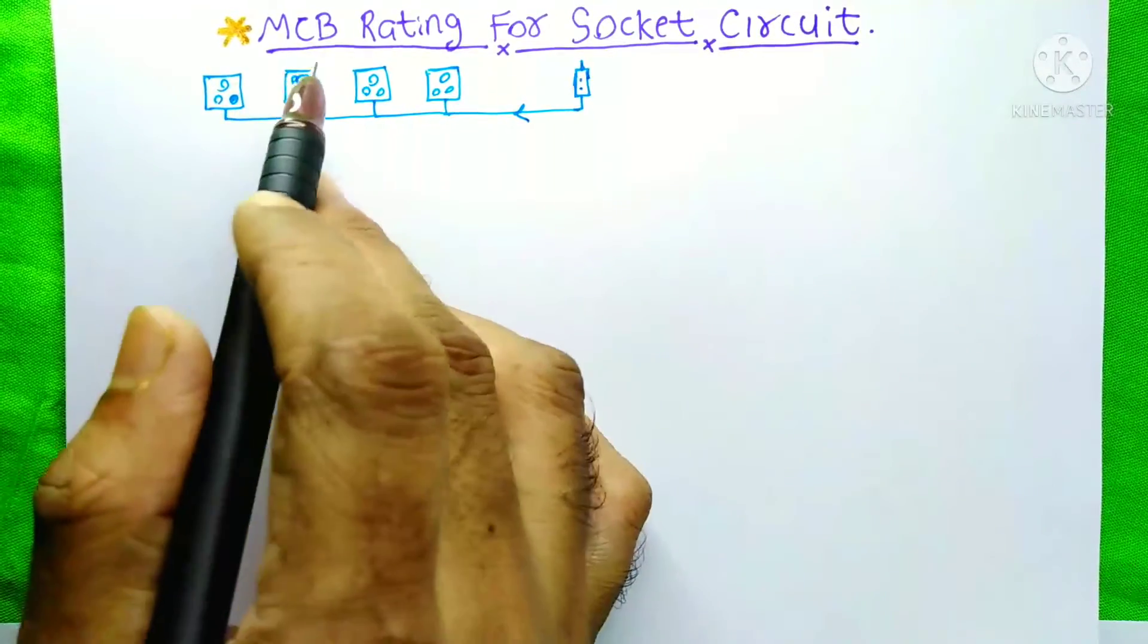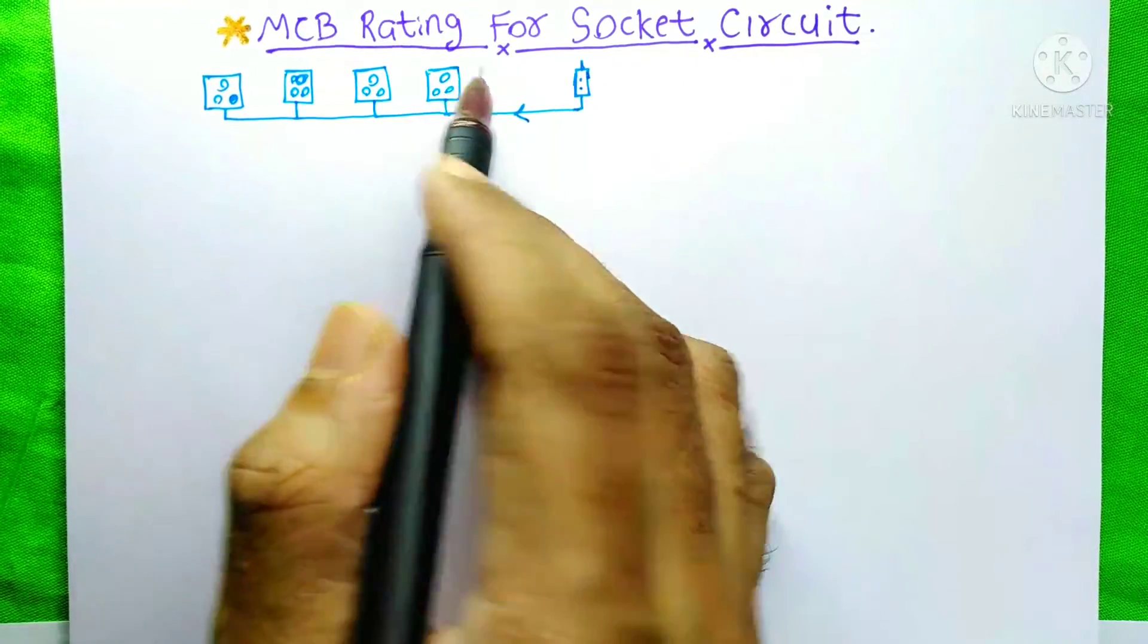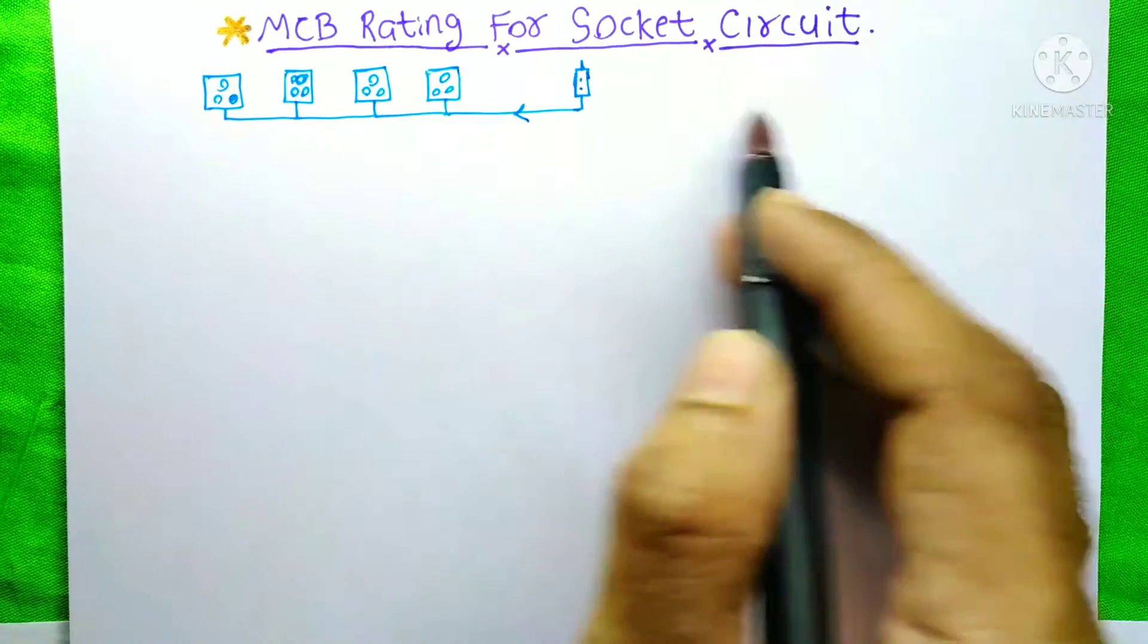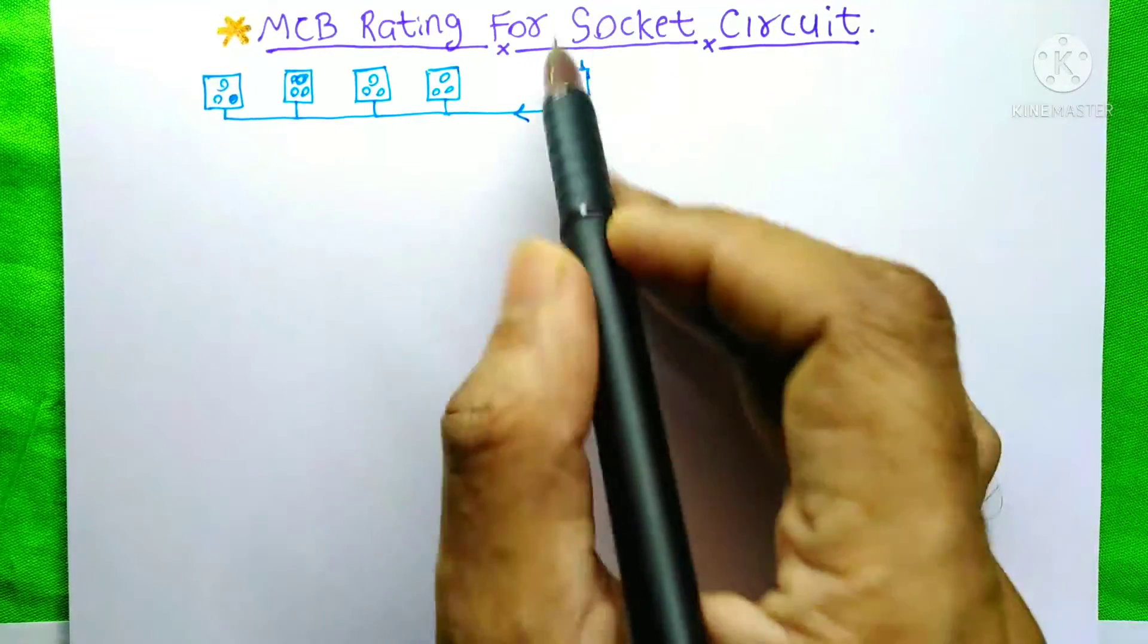Today you are going to learn how to calculate the MCB rating for the socket circuit. It means the circuit which contains only the sockets.